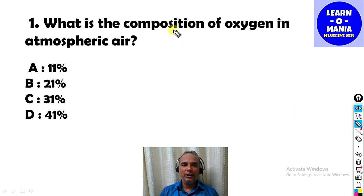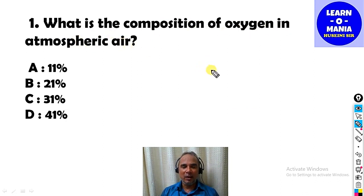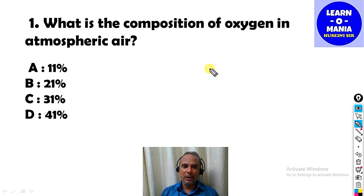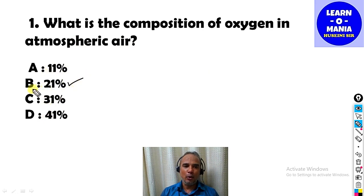The first MCQ is: What is the composition of oxygen in atmospheric air? The answer is option B — Oxygen 21%.